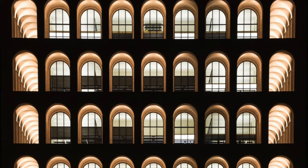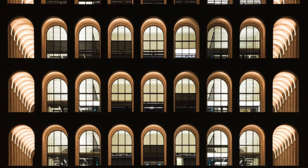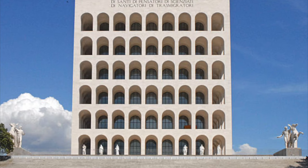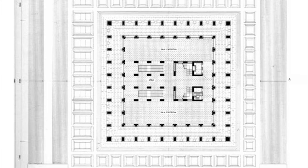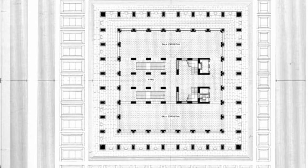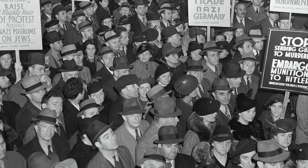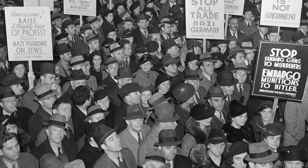It was designed as part of the 1942 World Fair that was supposed to take place in Rome. Elements of fascist architecture include lack of ornaments, symmetry, and a centered plan. But what is fascist architecture? Many use the term 'fascist' today to describe anything that is totalitarian and oppressive, or anything that does not align with their beliefs.